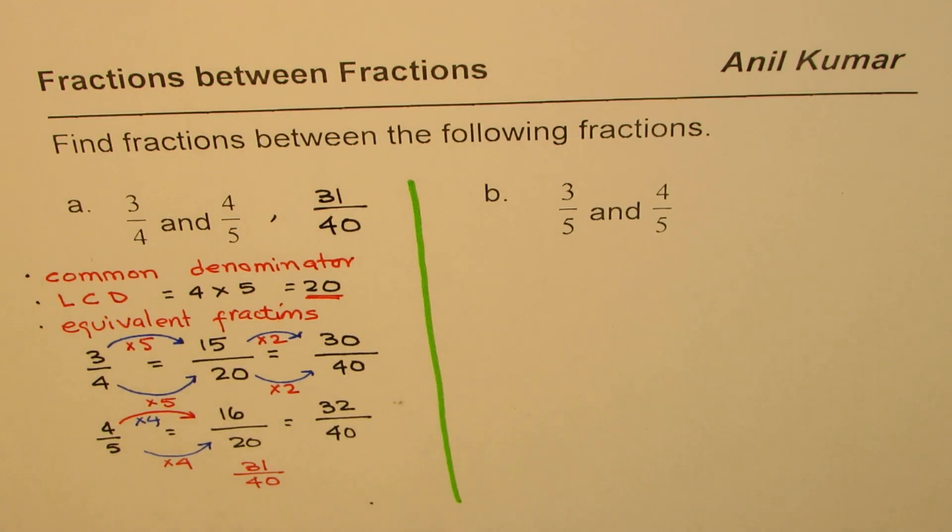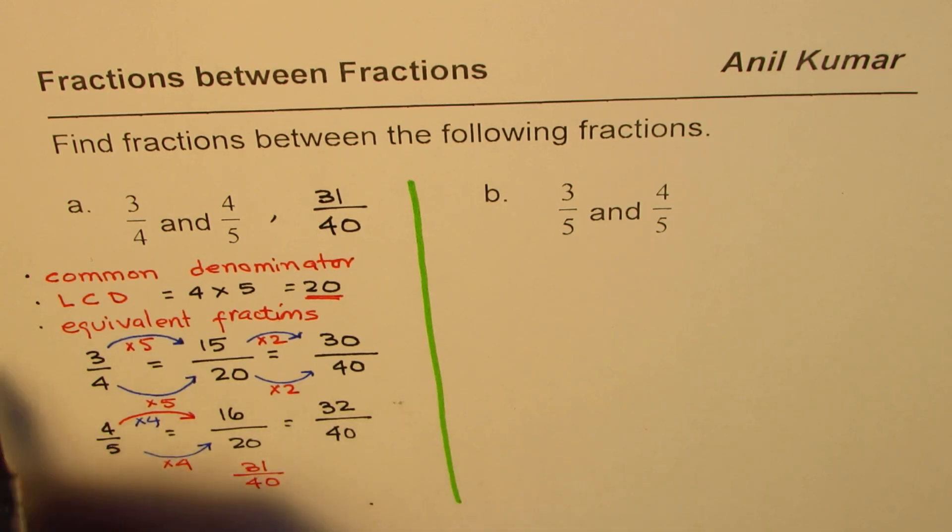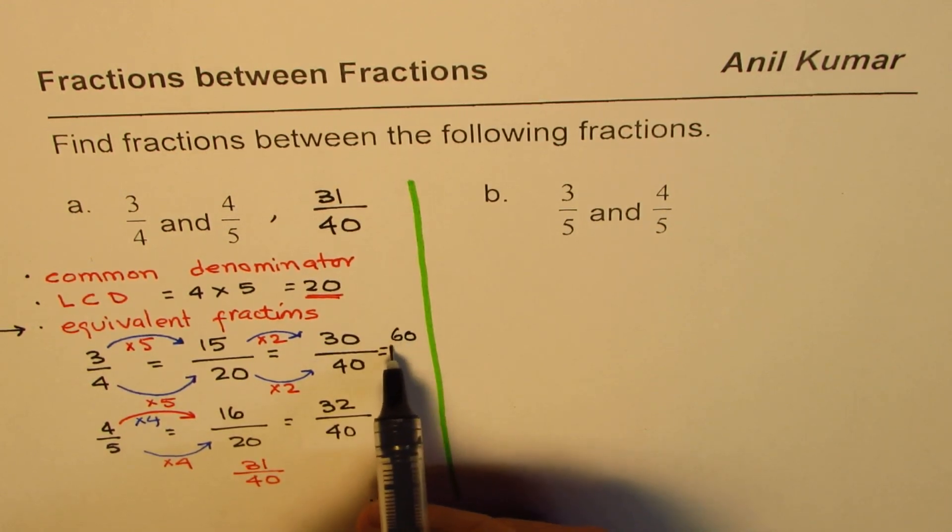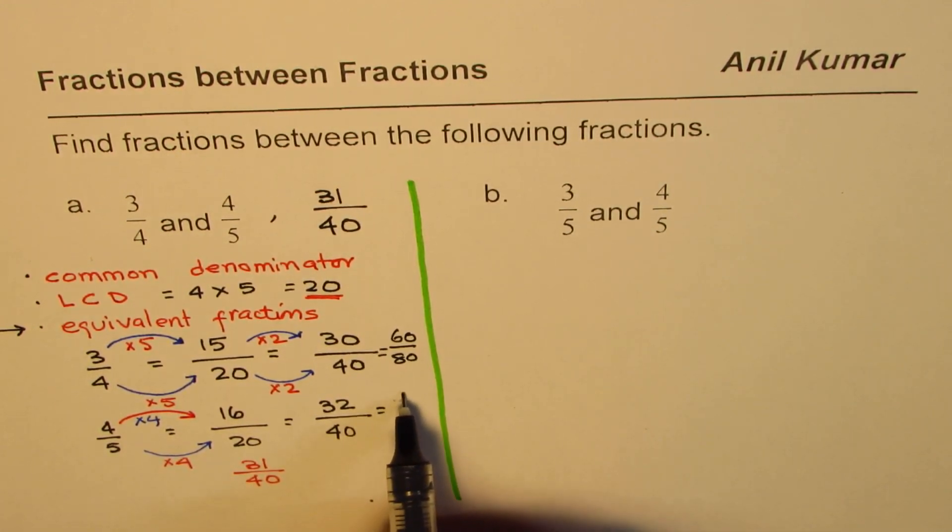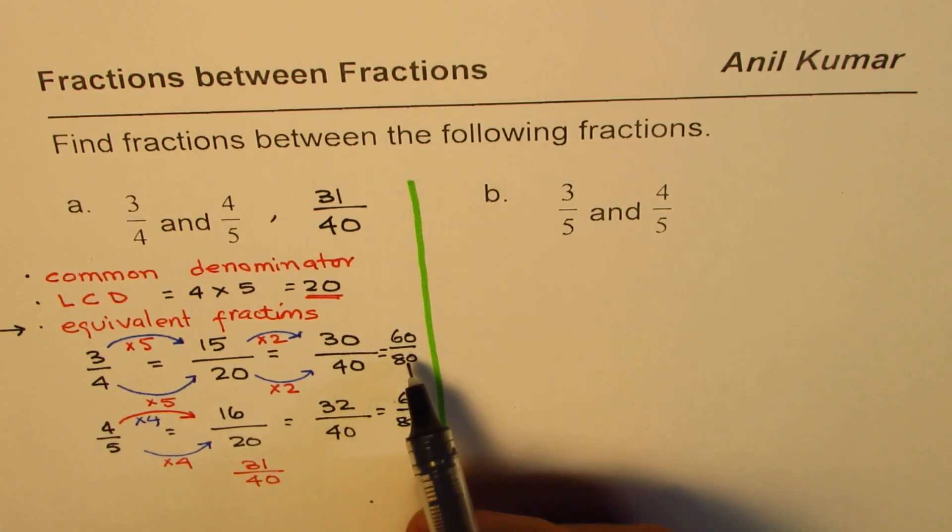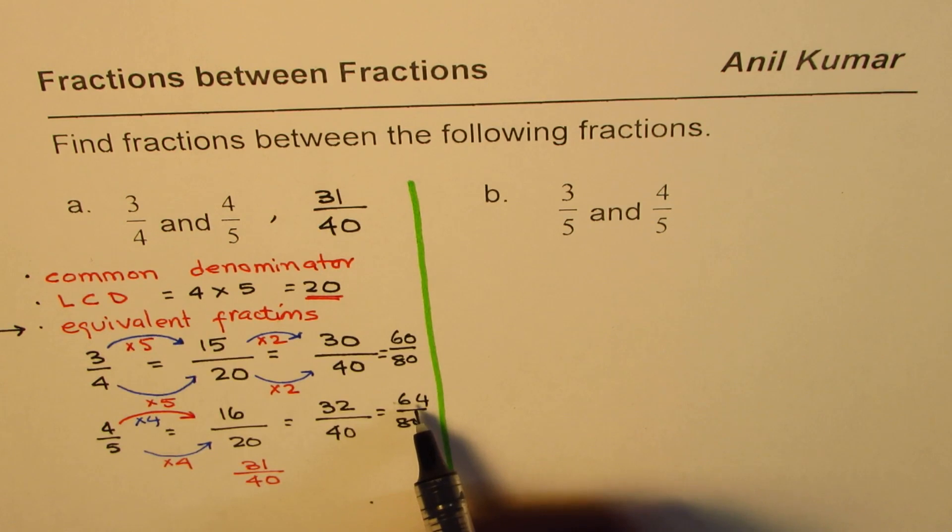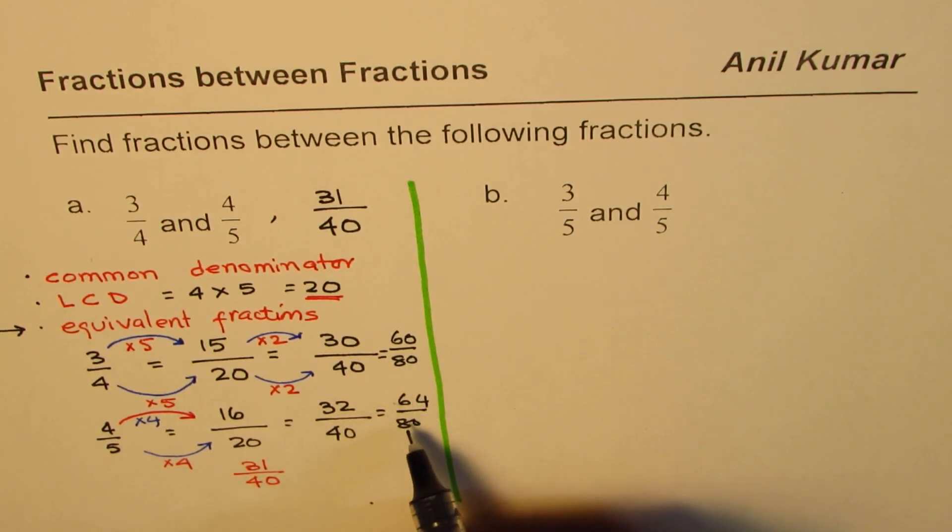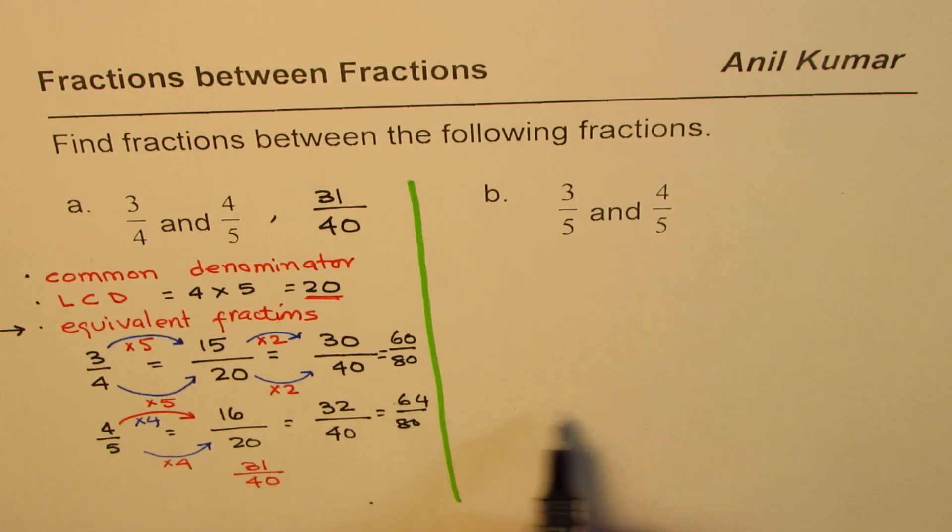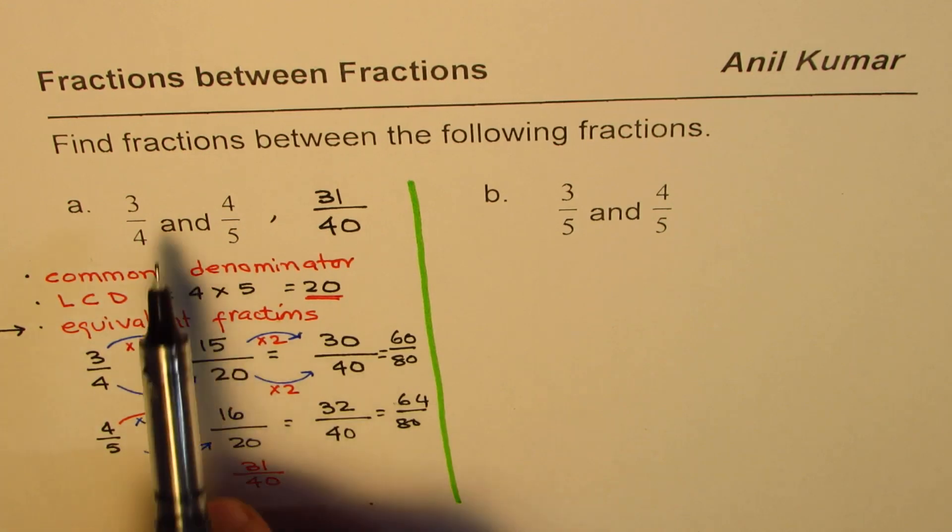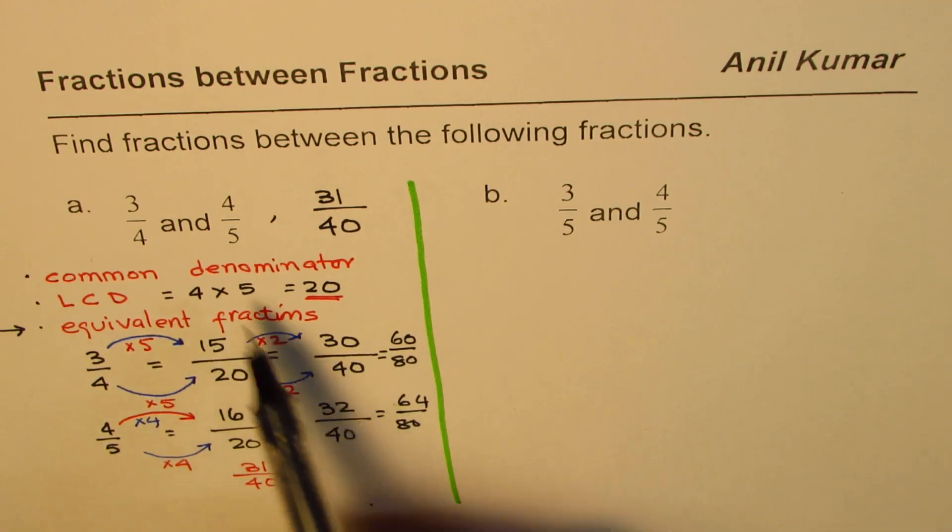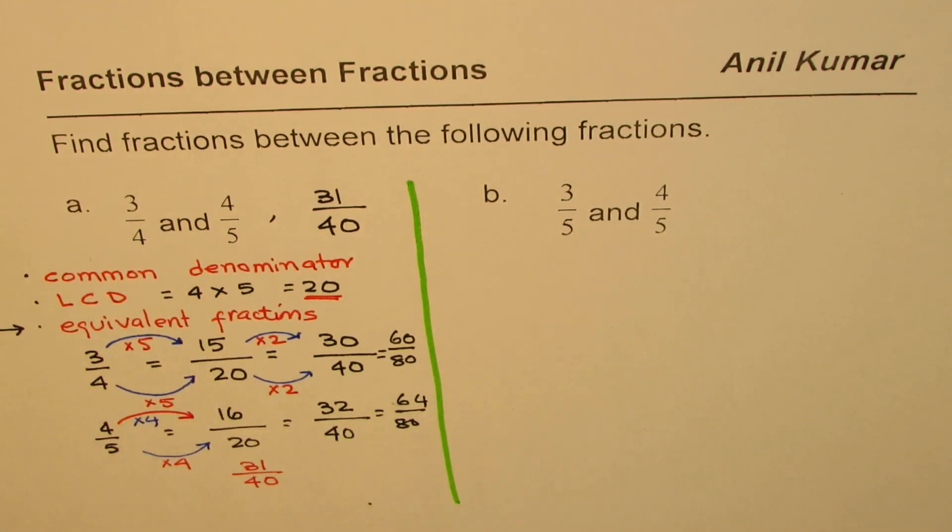Now the question is, if I was looking for more numbers between them, what should I do? So you have to do this step again and again. You could go from this to 60 over 80, equivalent fraction. 64 over 80. And now you can see a couple of more fractions between them. That is 61 over 80, 62 over 80, 63 over 80. So likewise, you can continue this pattern and get more and more numbers between the original 3 over 4 and 4 over 5. These numbers are equivalent to what we started with.